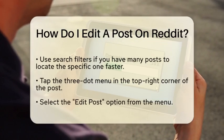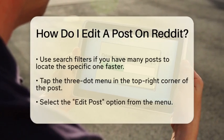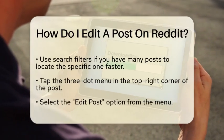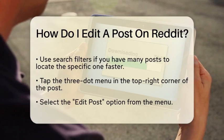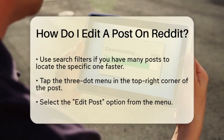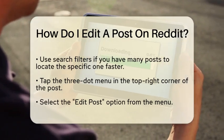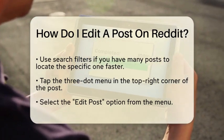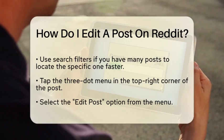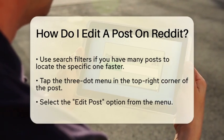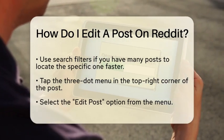Next, scroll through your posts to find the one you want to edit. If you have many posts, you might want to use any available search filters to speed up the process. Once you locate the specific post, it is time to open the options for that post.